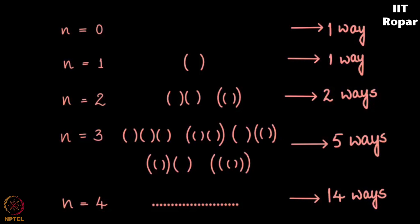You might want to stop here and try it yourself. So we see that the sequence is 1, 1, 2, 5, 14, and so on. Here we see that the Catalan numbers hold true in the case of grouping of parentheses.